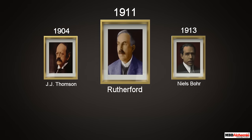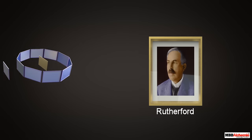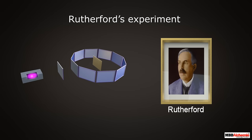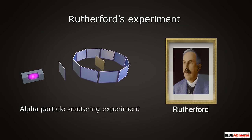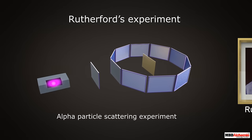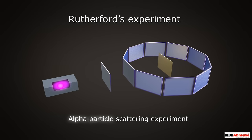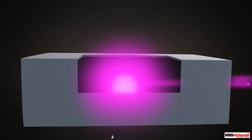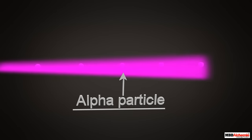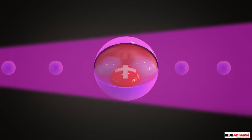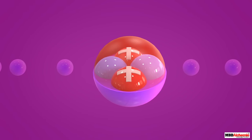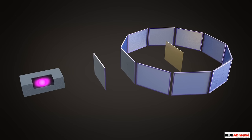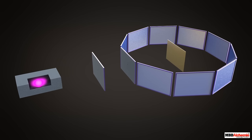One of those experiments which could not justify the Thompson model was done by Rutherford. Rutherford's experiment got popular by the name of alpha particle scattering experiment. To understand about his experiment, let us first see what alpha particles are. Alpha particles are emitted by radioactive substances. These are helium ions with double positive charge.